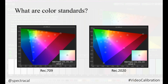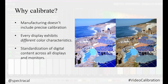Without color standards, there would be no basis for display calibration. The goal of display calibration is to match a display's output to a specific color standard so everyone who calibrates to these standards will in effect have matching displays. Most video displays, broadcast monitors, and computer monitors are not calibrated precisely at the factory, as every display exhibits different color characteristics.